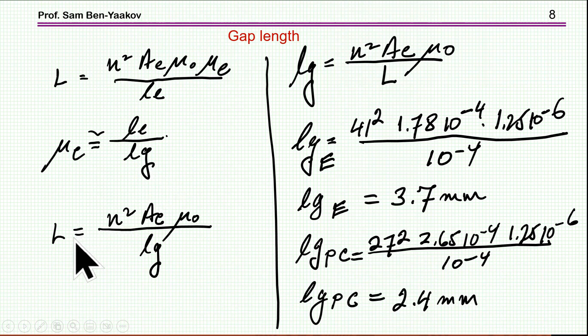So, I'm getting here that L, just replacing the relative permeability with this, I'm getting this equation now, from which I can get the required gap length. Which is this expression, I know everything here, number of turns, cross-section area, μ0 of course, and the inductance. And what I find is that for the E core, I need 3.7 millimeters, and for the pot core, I need 2.4 millimeters. So, notice that the E core needs a different gap than the pot core, and this, as we will see, has to do with the cross-section area of the core. But, as of now, we've just found it from this relationship.